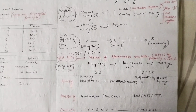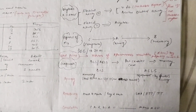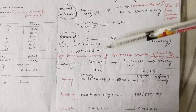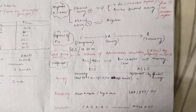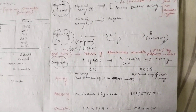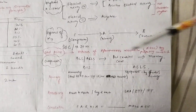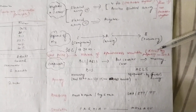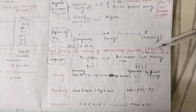We start CPCR when we see cardiac arrest. The end point of CPCR is the return of spontaneous circulation, which is called ROSC. How will you measure this? By palpating the carotid artery. If you can feel the pulse in the carotid artery, that means your CPCR is successful and you can stop.